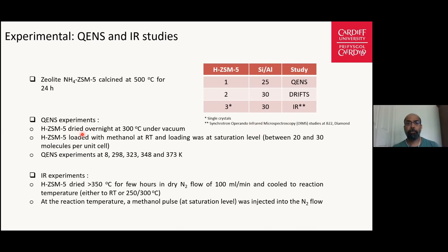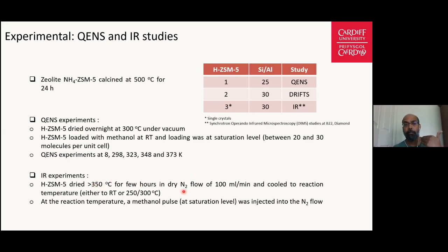For QENS experiments, ZSM-5 was dried overnight at 300 degrees C under vacuum and cooled to room temperature where methanol loading was conducted. QENS measurements were conducted at 8 Kelvin, which serves as the resolution function, followed by 298, 323, 348, and 373 Kelvin. For infrared studies, ZSM-5 was dried at higher temperatures under inert atmosphere and cooled to reaction temperature — either room temperature, comparable to QENS measurements — or at higher temperatures of 250 and 300 degrees C. Methanol loading was again at saturation level.